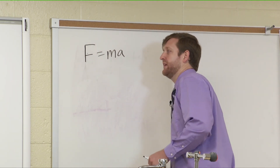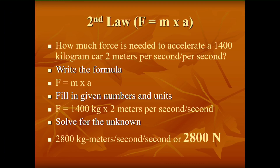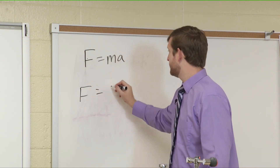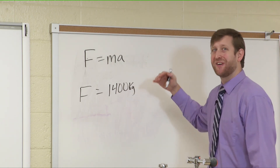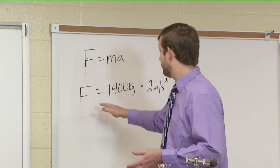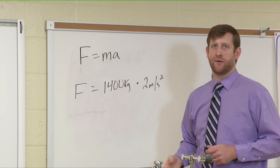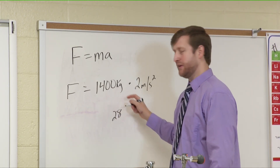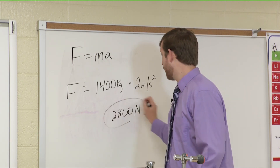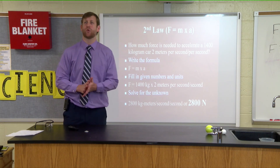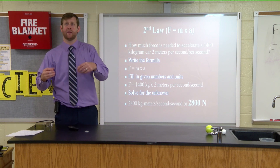We're trying to find force. Our mass is 1,400 kilograms and our desired acceleration is two meters per second squared. To find force, multiply those two together: 14 times 2 is 28, add two zeros — 2,800 newtons. The force needed to accelerate a 1,400 kilogram car at two meters per second squared is 2,800 newtons. Remember, a kilogram times a meter per second squared equals a newton.